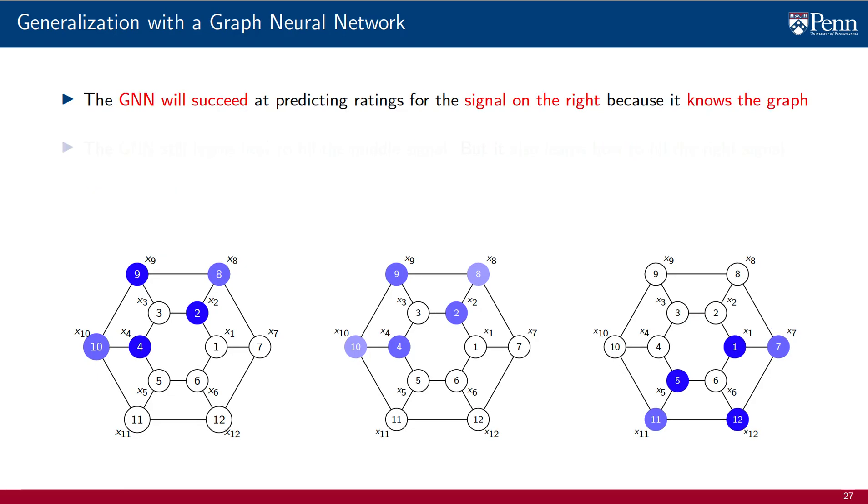But who knows the graph? The GNN does. And because it knows the graph, it will succeed at learning how to fill the signal on the right.